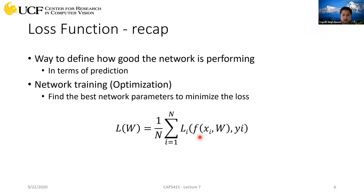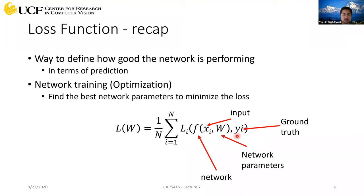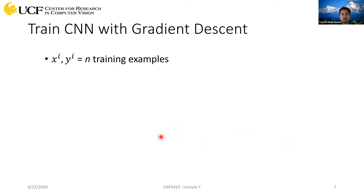This is the general formulation of any loss function. We'll have an input — it could be an image or a set of images — and these are the network weights we're going to learn and update when we back-propagate. This f is the network function. We compare whatever the network is predicting to our ground truth, and based on how far away the prediction is from the ground truth we estimate how good our network is. For all samples or batches we sum up these losses, take the average, and that gives a good estimate of how good our network is.